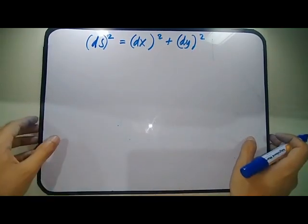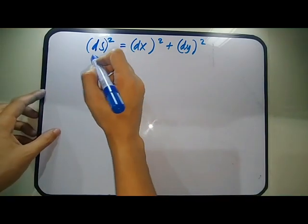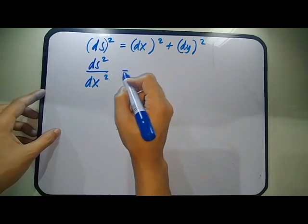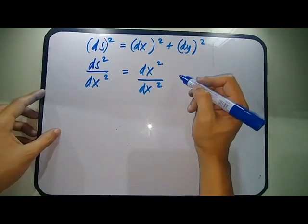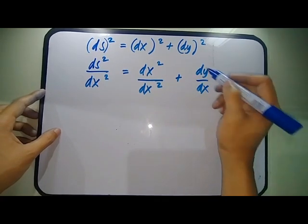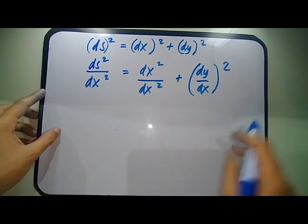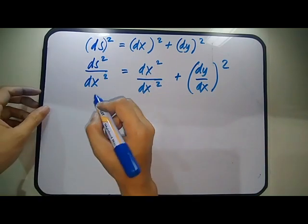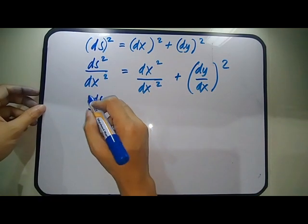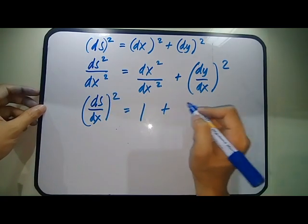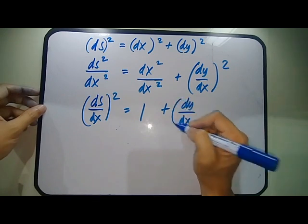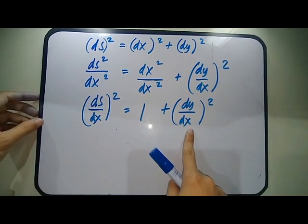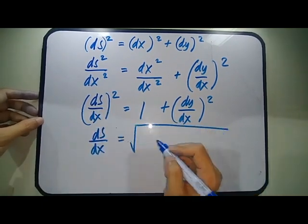We divide both sides by dX² in order to get a dY/dX expression. So dX²/dX² + dY²/dX², which gives us dS²/dX² = 1 + (dY/dX)².